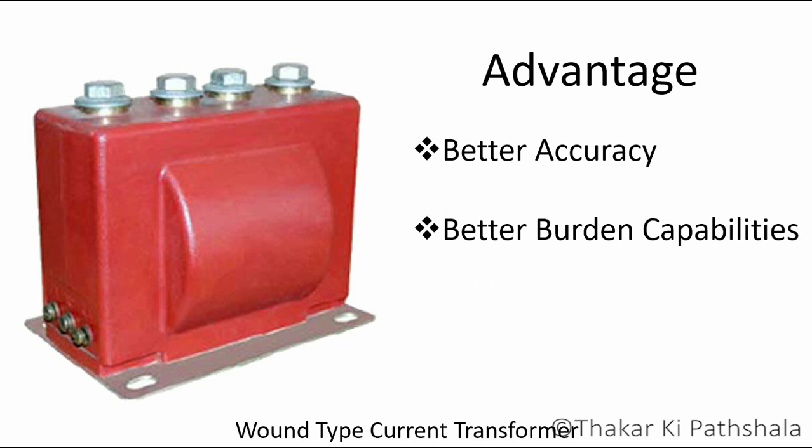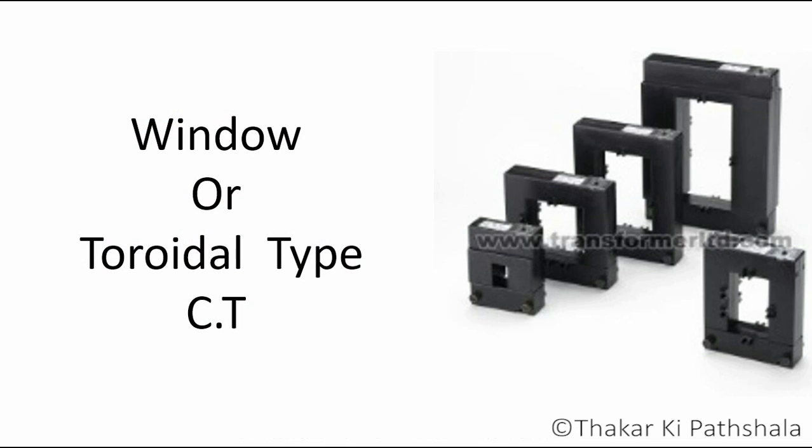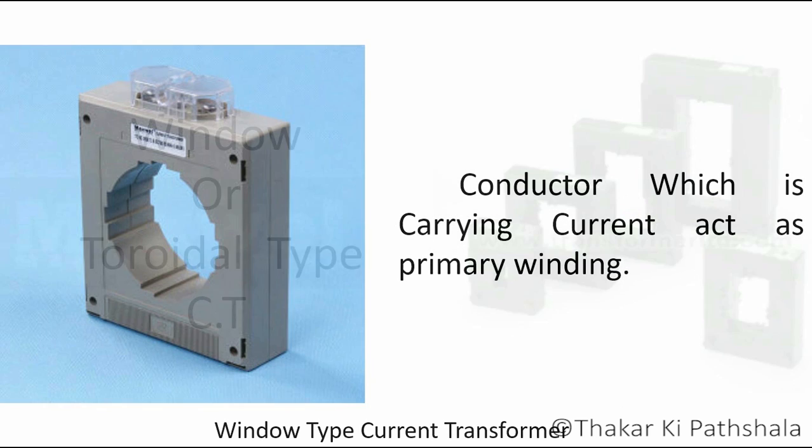Now we will see window or toroidal type current transformer. In this type of current transformer, there is no primary winding. Instead, the wire which is carrying current acts as primary winding itself.